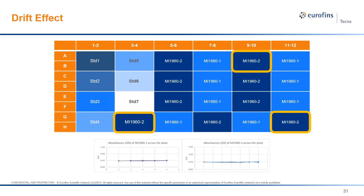Some automatic analyzers have intrinsic limitations in the number of determinations that can be run, as the machine can be slow and implicates operational delays. I wanted to run a full plate of 96 wells, running alternating reference materials to see if the assay result had an impact on sample position. As visible in the graph, all results were compact despite the sample position variation, so I was confident there was no drift effect.